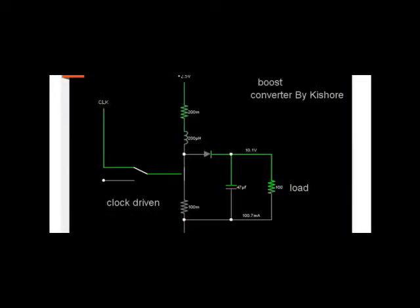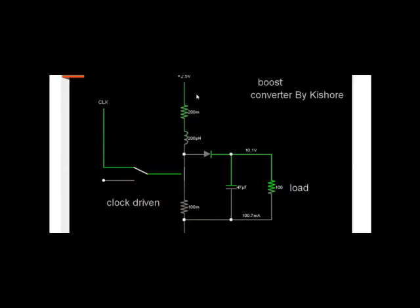This is the circuit which we are going to use, and here is the simulation. As you can see there is an input of 2.5V here. There is an inductance of 200 microhenry, and a 47 microfarad capacitor and 100 ohm resistor acting as the load. There is a switch which is controlled by a clock. The 200 milli ohm and 100 milli ohm values are just for simulation purposes — in a practical circuit you can ignore them.